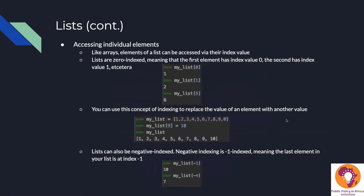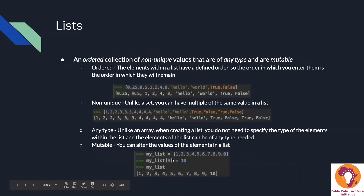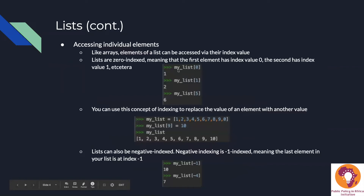We can access individual elements of a list. Like arrays, elements can be accessed via their index value. Lists are zero-indexed, meaning the first element has index value zero, the second has index value one, and so on. Looking at our list of 1 through 10: index zero gives us 1, index one gives us 2, and index five gives us 6. You can use this indexing concept to replace the value of an element, like we did setting index nine equal to 10 using the assignment operator.